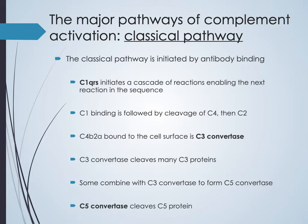C3 convertase converts C3 into its active form by cleaving it into C3B and C3A. C3A goes off and can cause inflammation, acting as a chemokine. C3B binds to the C4B2A complex, and that forms the C3 convertase. C3 convertase then converts C3, and further activates C5, generating C5B and C5A.